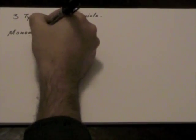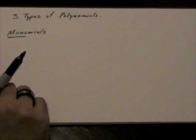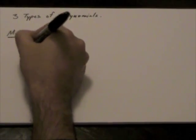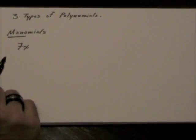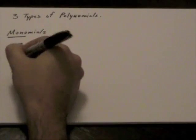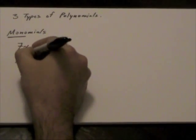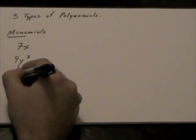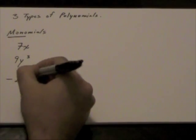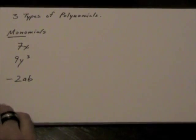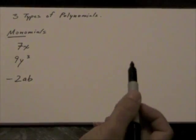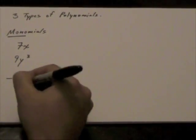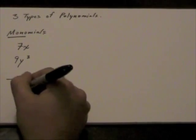Monomials. Monomials have one term. A few examples of monomials are, well, like that example we just did, 7x. Another example might be 9y cubed. Another example might be negative 2ab. Okay? Now, if we look at it, a monomial here, or actually, let me throw in one more.